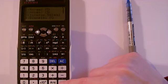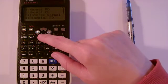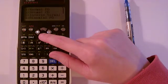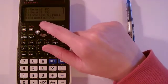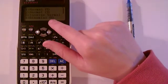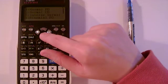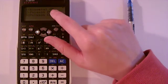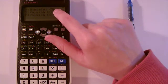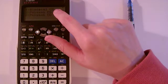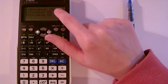It looks like four different options, but actually if we scroll down, there are two different binomial distribution options. There's the probability distribution option here, number four. And if we scroll down, there's the binomial distribution with CD, which stands for cumulative distributions. That one's really, really useful.